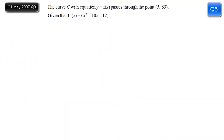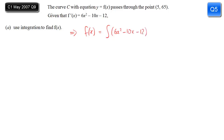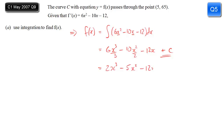In the next C1 question, we're given a curve y equals f(x), a point it passes through, and its derivative f'(x). We're asked to use integration to find f(x). Integrating 6x squared minus 10x minus 12 with respect to x: 6 times x cubed over 3, minus 10 times x squared over 2, minus 12x, plus C. Simplifying: 2x cubed minus 5x squared minus 12x plus C.